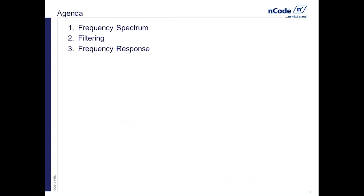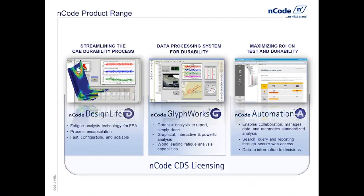Just as a reminder, ENCODE has three products within its software application. For today's topic, we're really going to be focusing on the middle one, which is ENCODE QuickWorks. In summary, QuickWorks is a tool that's going to allow you to take measured test data. It's most often used by test engineers, and we're going to process that data, hopefully getting the answers we're looking for. For today's topic, a lot of that is going to revolve around frequency content.